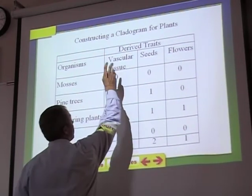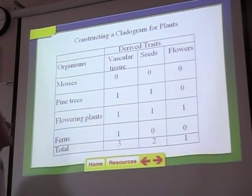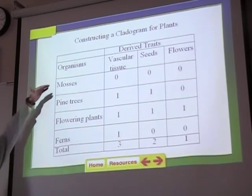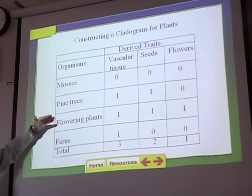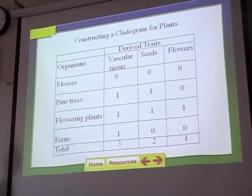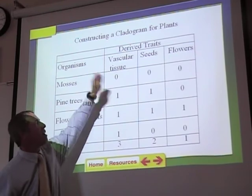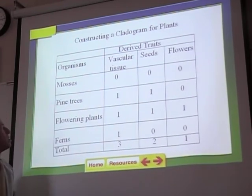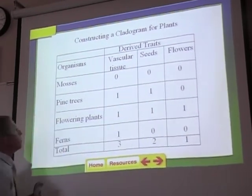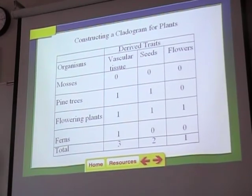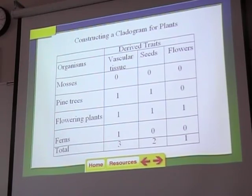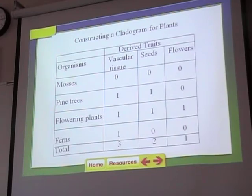Here are the traits: vascular tissues, seeds, and flowers — just three traits. There are four organisms: mosses, pine trees, flowering plants, and ferns. If they have a one in the space, that's like a check mark. Pine trees have vascular tissue. Mosses don't have any of the traits — that's called your outgroup. Have all four organisms on your cladogram.